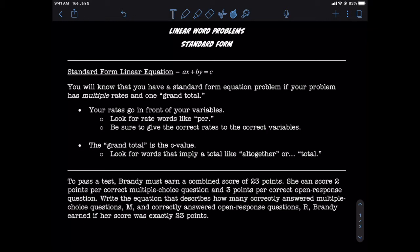Also good to know is that anything that is a grand total represents the C value, the number all alone on the right side of the equals. You're going to look out for words that imply total, like altogether, combined, or, I don't know, total.